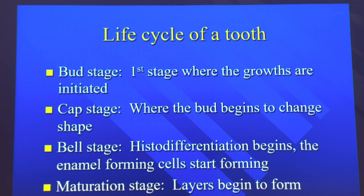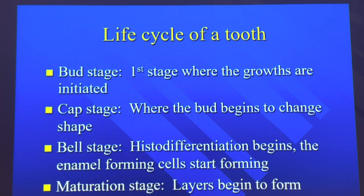The life cycle of a tooth: the bud stage is the first stage where growths are initiated. The cap stage is where the bud begins to change shape. The bell stage is where histodifferentiation begins and the enamel-forming cells start forming. The maturation stage is where layers begin to form, such as enamel, dentin, and cementum.